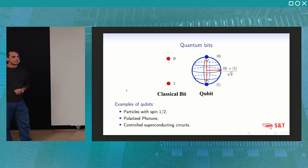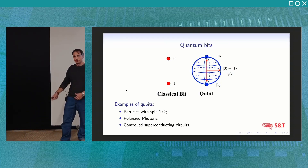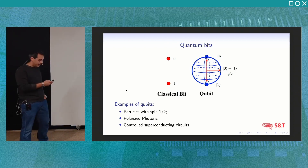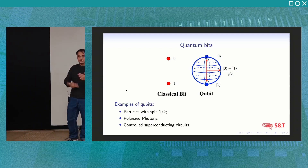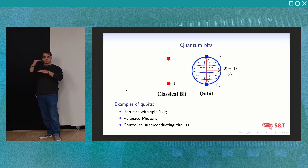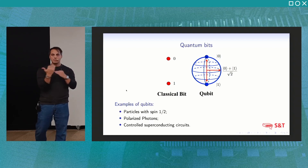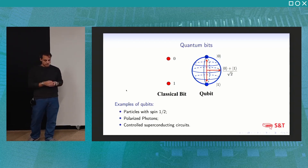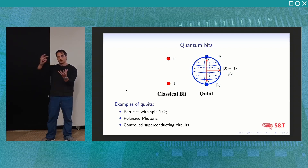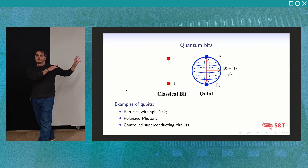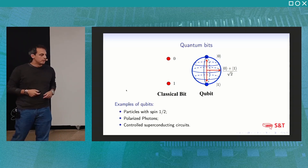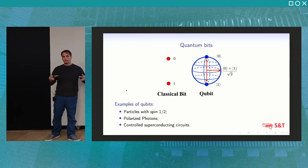The building block of quantum information and quantum computing is the quantum bit, the so-called qubit. In the classical case, a bit is an object with two states — 0 and 1. In quantum computing, a qubit is realized by two-level quantum systems where superpositions of states are available as a fundamental property of quantum mechanics. The states of a quantum bit are in bijective correspondence with points on the surface of a sphere called the Bloch sphere. Physically, qubits can be realized by spin-1/2 particles, polarized photons, or controlled superconducting circuits. The IBM slides are based on superconducting circuits.